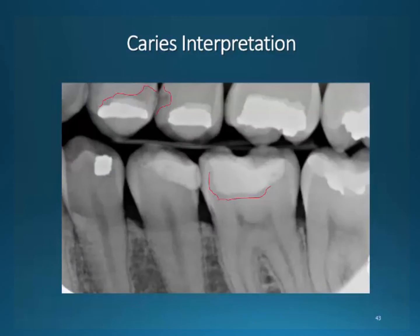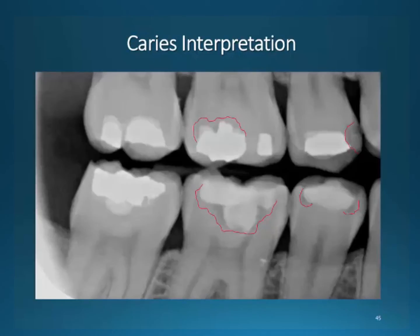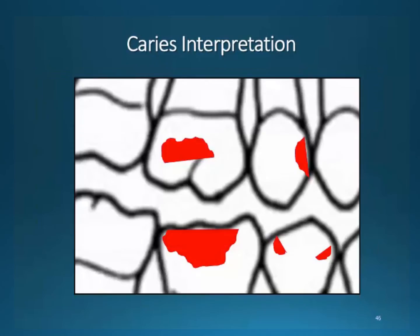We have some recurrent and new lesions here. Number 12 has a recurrent lesion under the occlusal filling. The mesial of 13 has a new lesion that I've outlined. There are also recurrent lesions on the occlusal of 30, possibly a lesion also developing on tooth numbers 20 and 21. And this would be a drawing with the best use of PowerPoint tools.